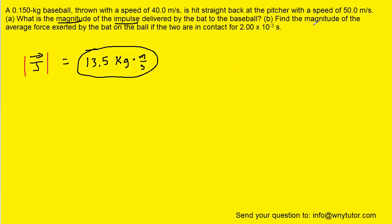Now on to part B, which is asking us to find the magnitude of the average force exerted by the bat on the ball if the two are in contact for 2 times 10 to the minus 3 seconds. Now we know that the average force is related to the change in momentum by the following equation. In essence, we multiply the average force by the time interval and that gives us the change in momentum.